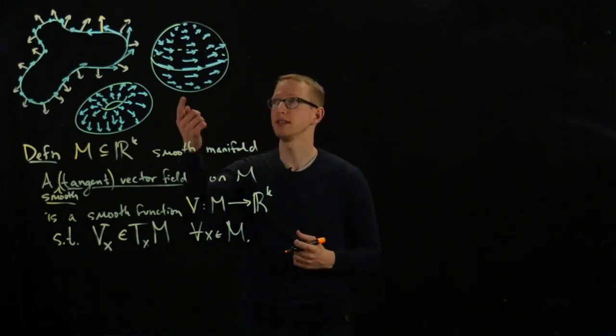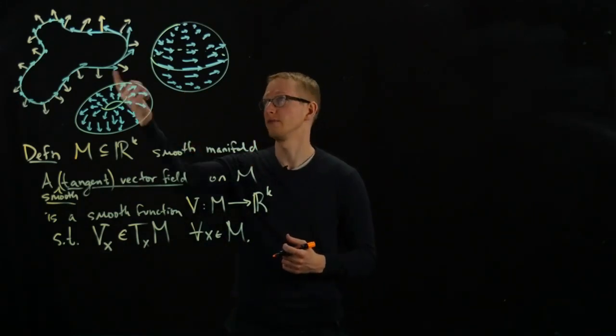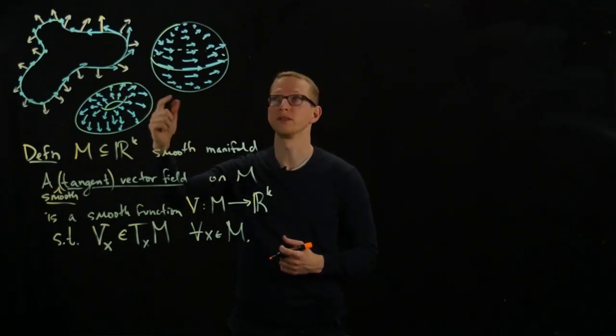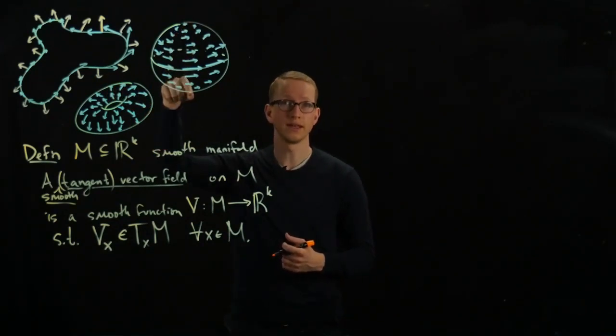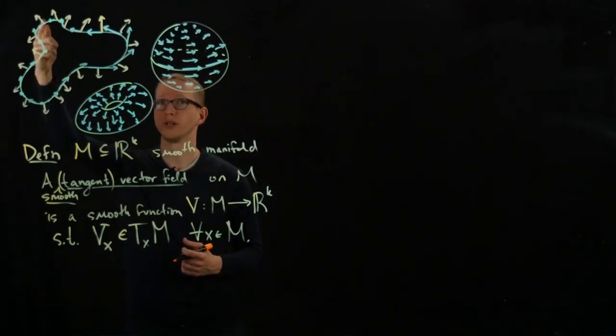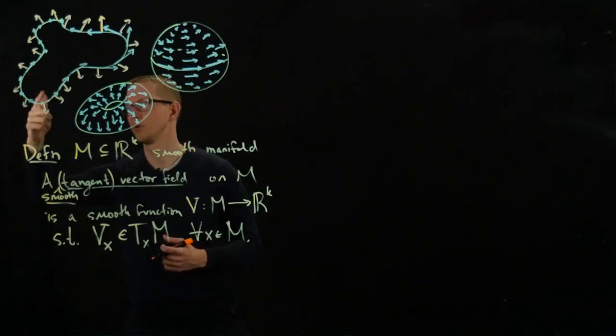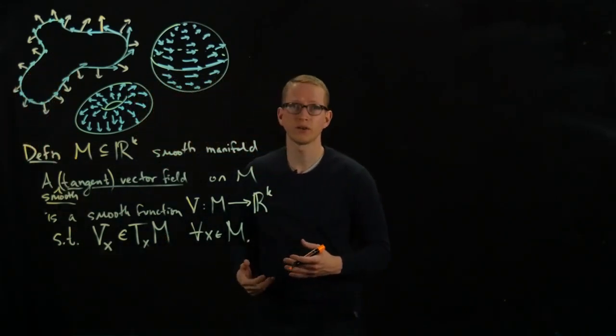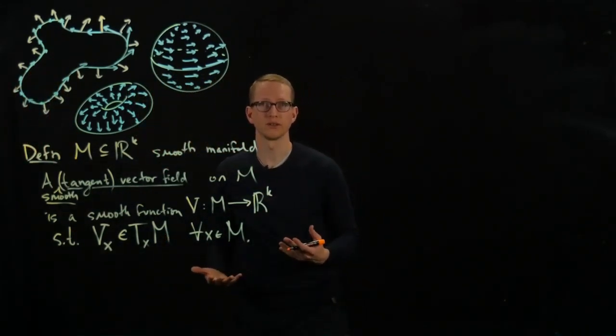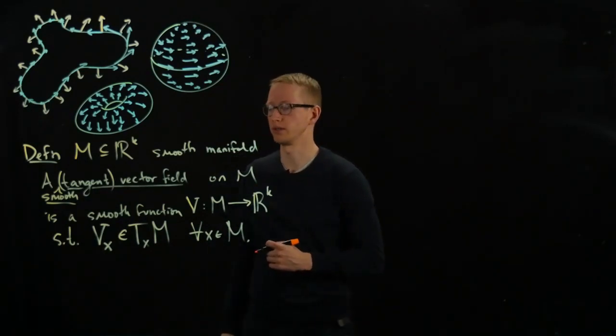For instance, in this sphere example, or even in this circle example, both of these situations have two critical points. Here, we have the north and the south pole. Those are critical points, because that's where the vector field vanishes. And here we have a critical point at this point, and another critical point somewhere here. And we can calculate the index of these vectors, of these vector fields at those points.